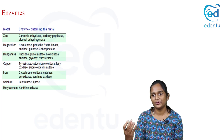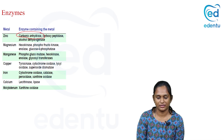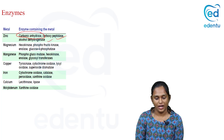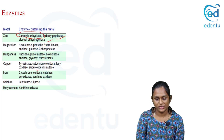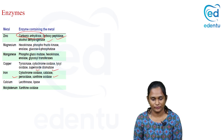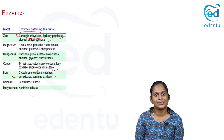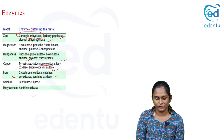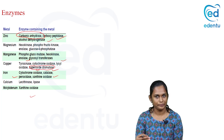Moving on to metal cofactors — you need to remember a few examples for each metal. Zinc: carbonic anhydrase, carboxypeptidase, and alcohol dehydrogenase require zinc as cofactor. Iron: enzymes in the electron transport chain, cytochrome oxidase, catalase, peroxidase, and xanthine oxidase require iron. Molybdenum: xanthine oxidase. Copper: tyrosinase, lysyl oxidase, and superoxide dismutase. So you have to remember a few enzymes as examples for each metal.